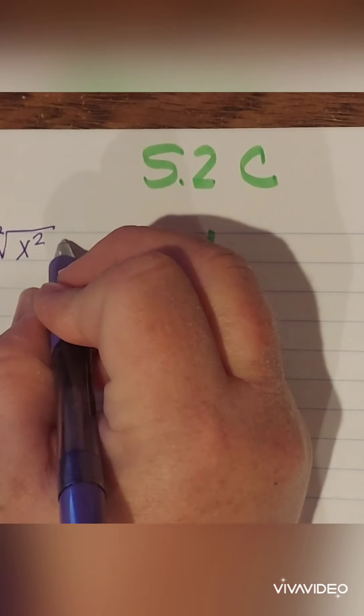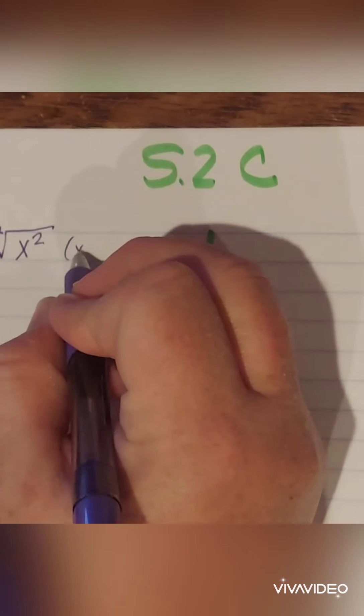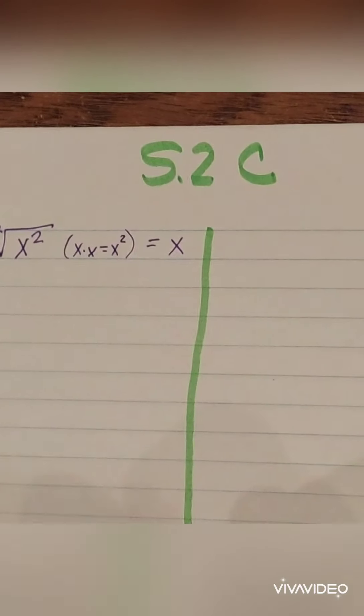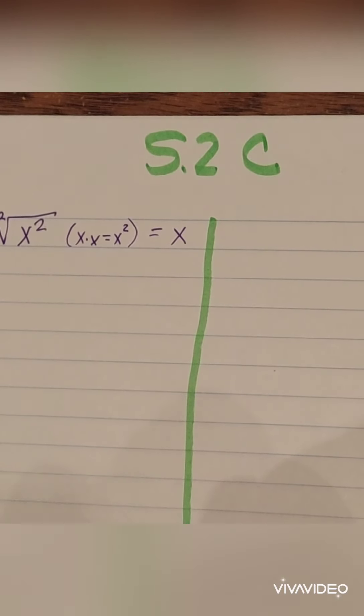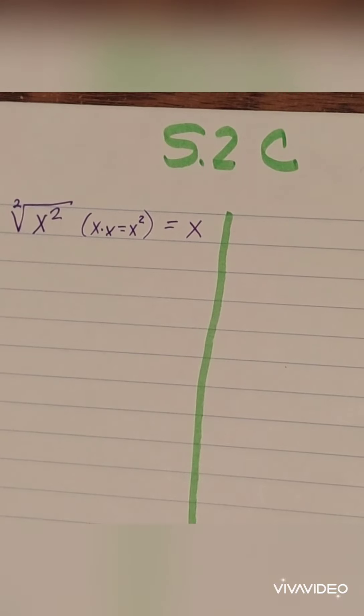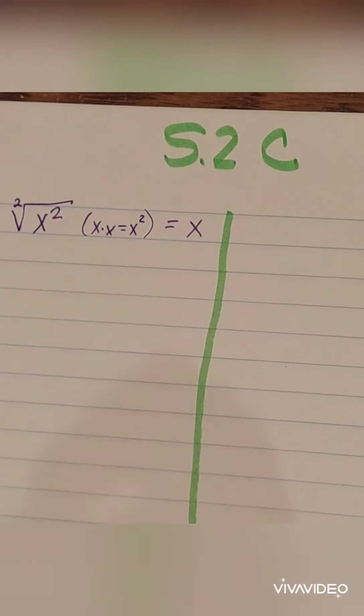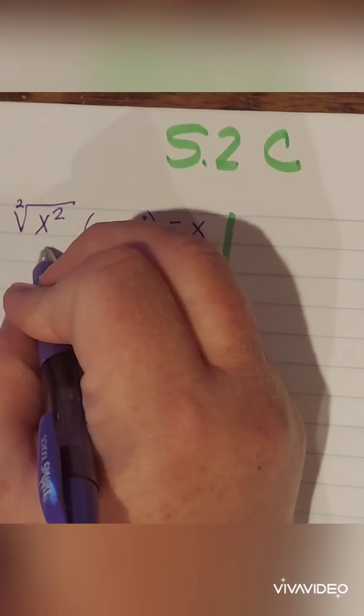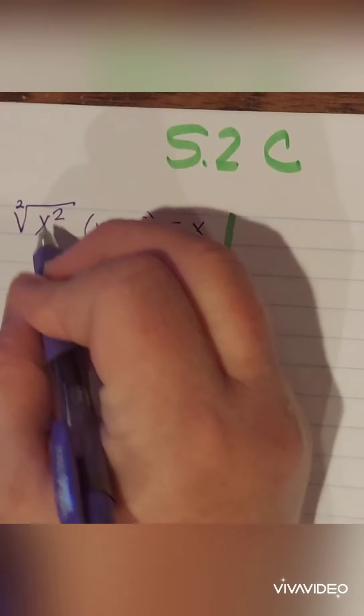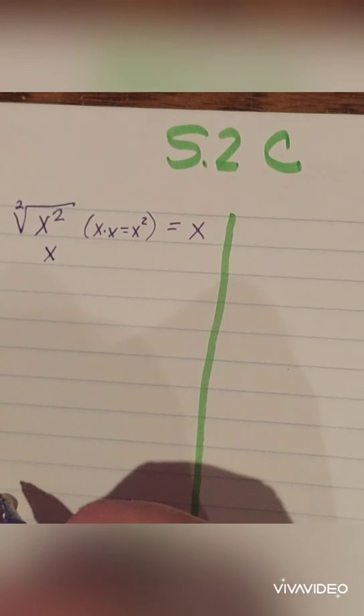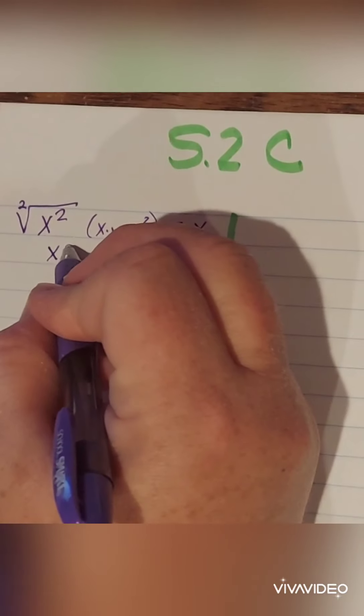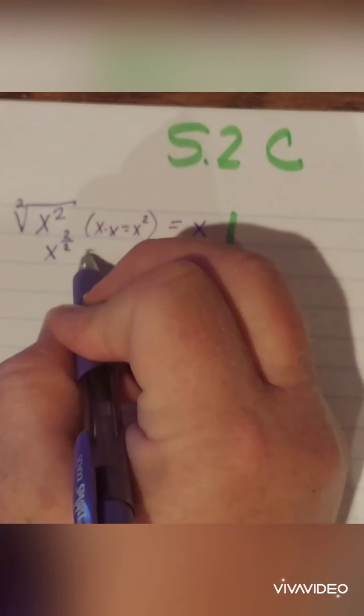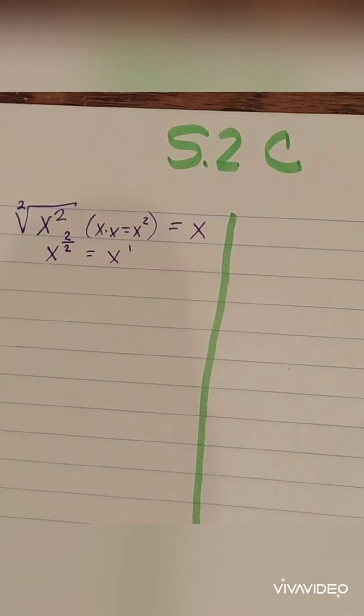Now I left some space because I want you to think about x times x equals x squared. And the reason I wanted to put that is because I don't want you to forget that this is still the same properties that we started with at the very beginning of this section. I also want you to know that if you were to change this from a radical to an exponent, you would put this two on the bottom. You would put this two on the top. And what does two over two reduce to? That's right, it's x to the first.